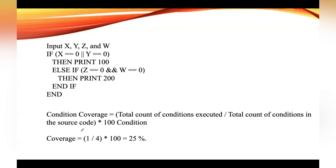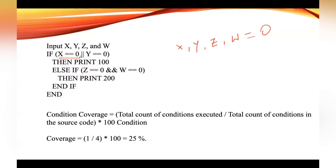Let us take this example and try to calculate the condition coverage. With the first test case, we take values of x, y, z, and w all equal to zero. The first condition of the OR operator is x equal to zero — yes, x is equal to zero, so it holds true. Since the left part is true, there is no need to execute the right part; you can skip the right side of the OR from evaluation. So the condition y equal to zero remains unchecked in this case.